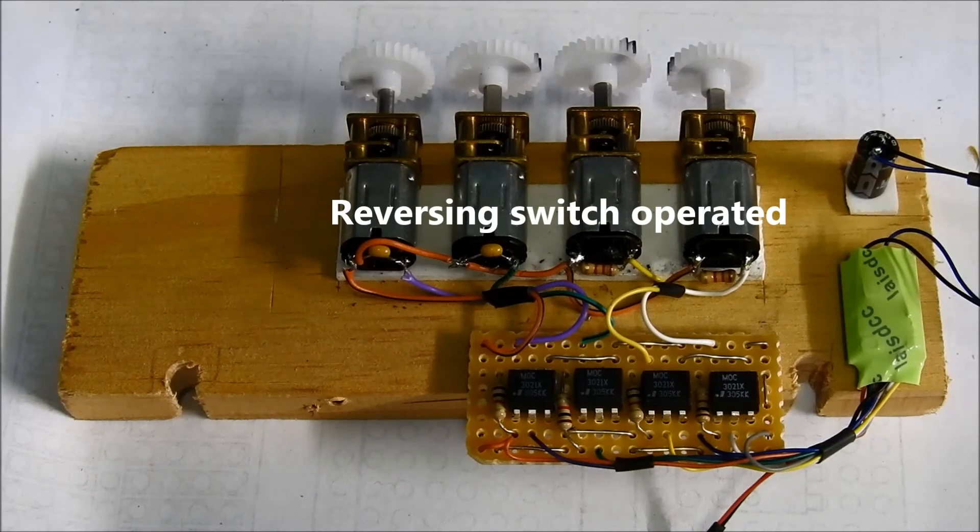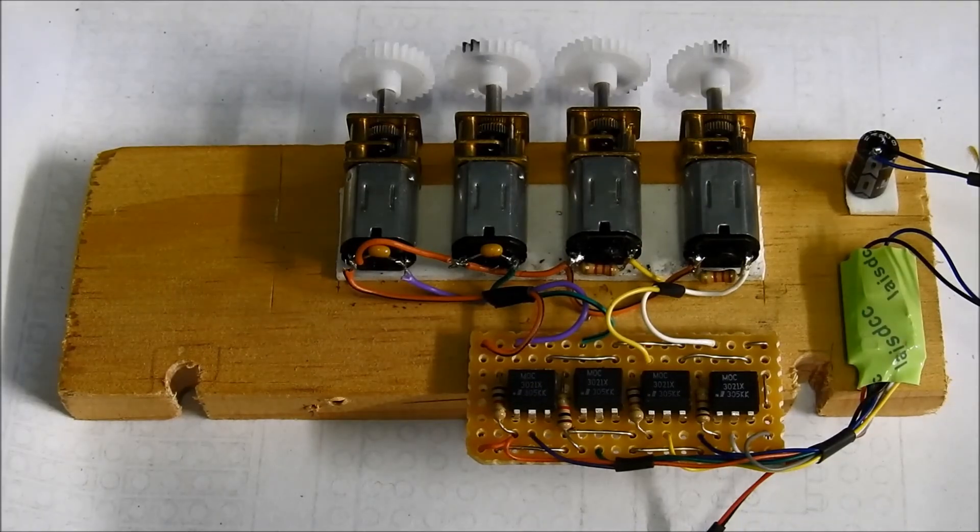Now I can reverse the motors using the normal reversing switch on my throttle. And turn each one off and just leave one running if I want.